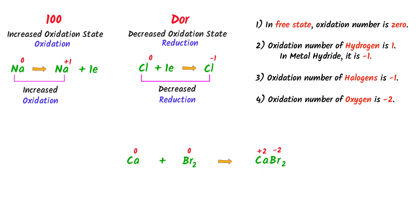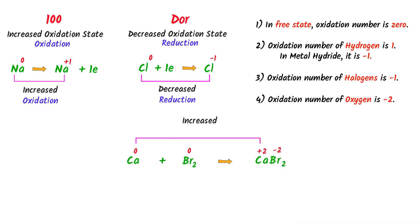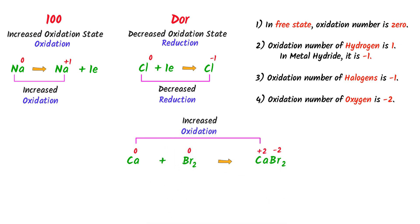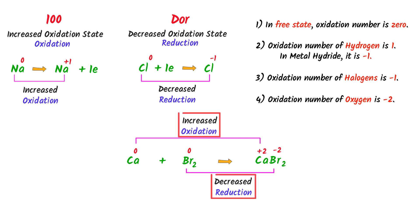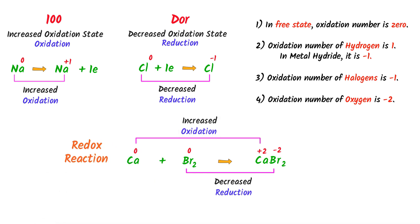Now, listen carefully. The oxidation state of calcium increases from zero to positive two, so it is oxidized. While the oxidation state of bromine decreases from zero to negative two, so it is reduced. We can see that oxidation and reduction both take place in this reaction. Thus, it is a redox reaction.